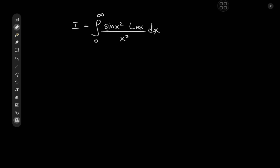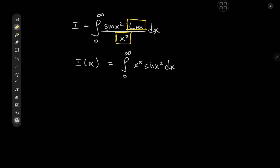What exactly is our approach here? I'd like to begin by defining an integral function I(α) as the integral from 0 to infinity of x^α times sine(x²) dx. There are a couple of reasons for that. First, if I plug in α equal to negative 2, I recover the x² in the denominator of the integrand. Also, we need a log(x) term, and we can get that by differentiating partially with respect to α, because that leads to x^α times log(x).